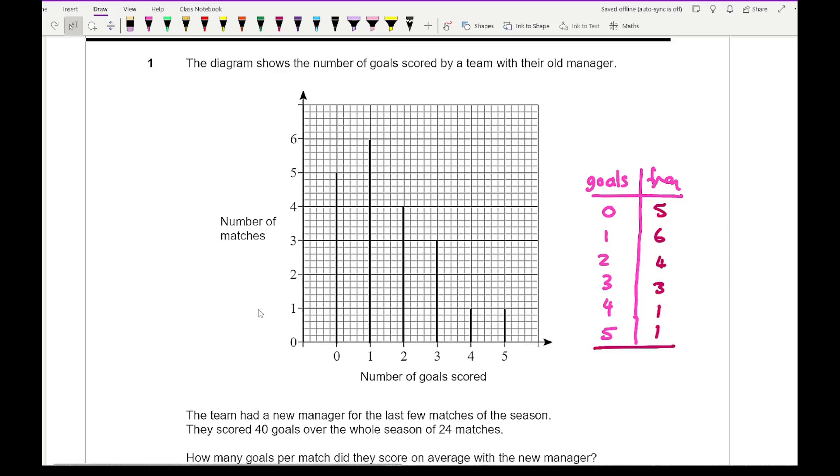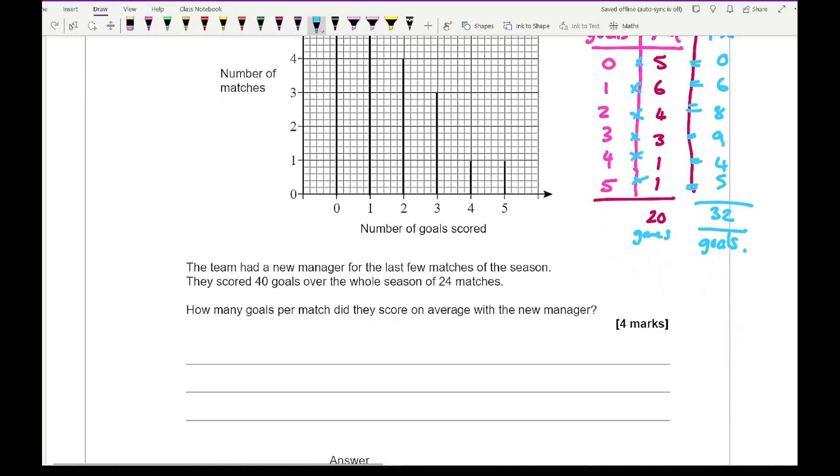If we then total this up, there were 20 games from the old manager. To find the total number of goals, I'll create an fx column by multiplying each of those numbers. Here we've got 0, 6, 8, 9, 4, and 5. If we add up all those numbers we see that in 20 games they scored a total of 32 goals.